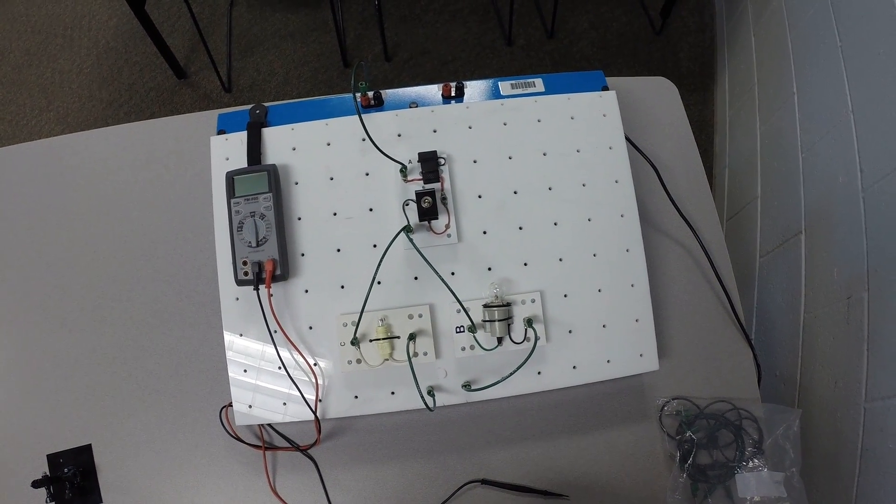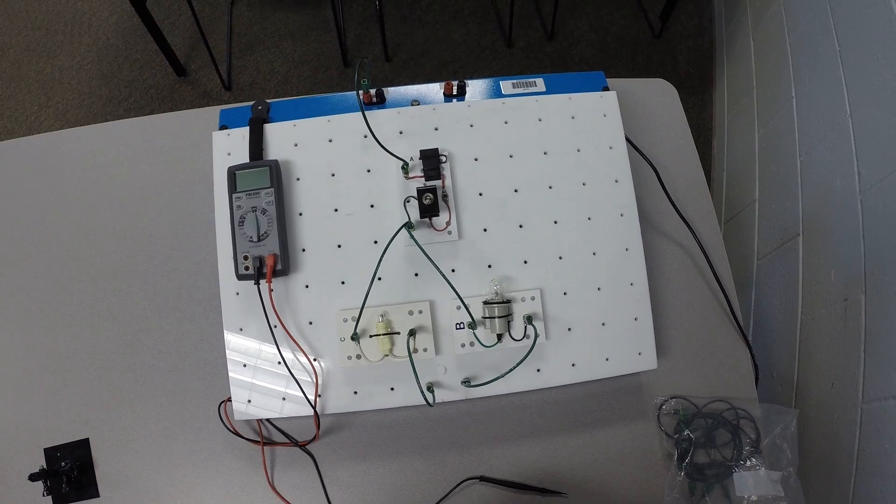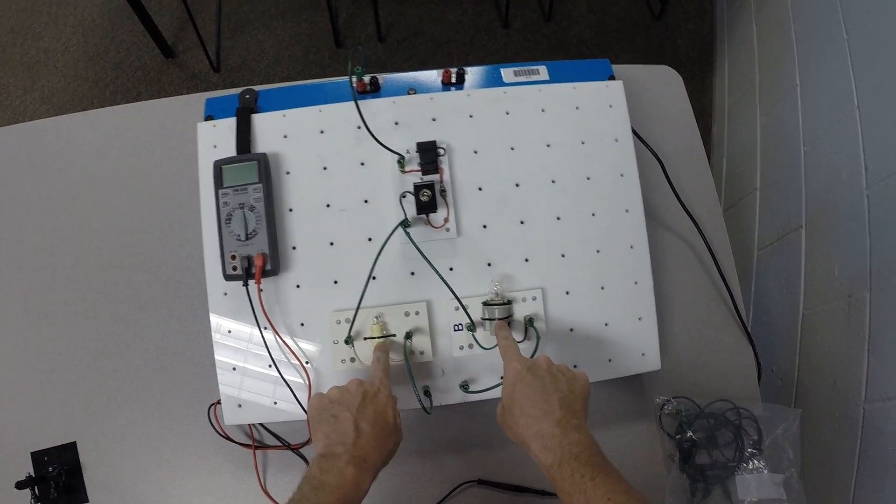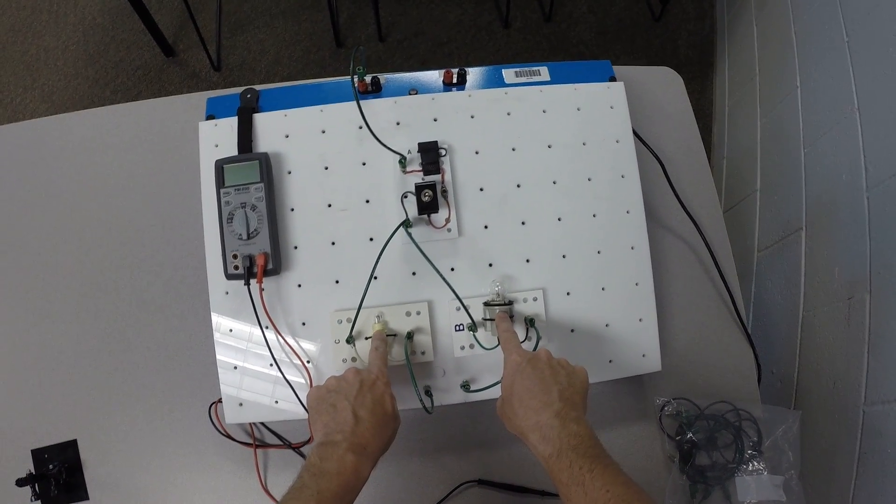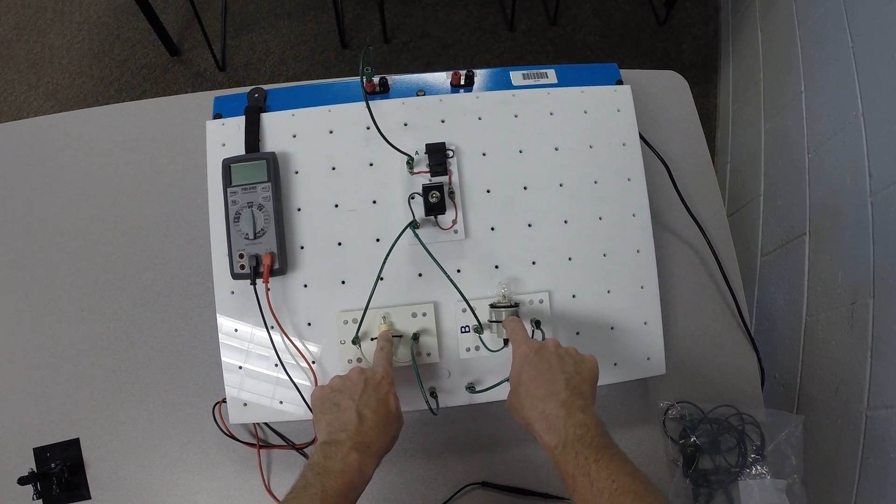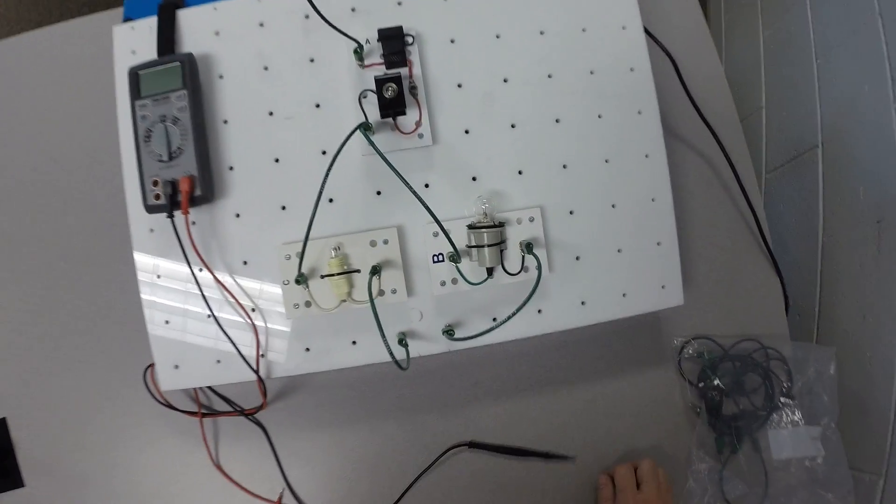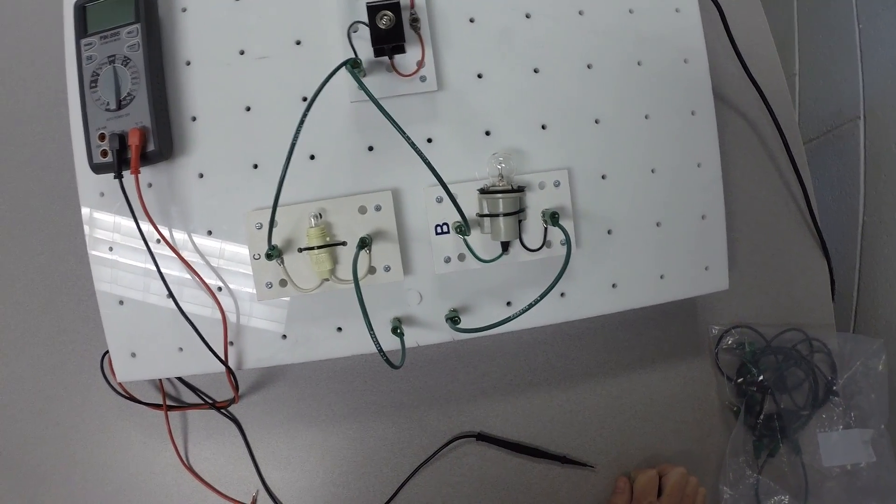If we're measuring current in a parallel circuit, there are some things that we have to consider. First of all, we've got two different bulbs here that have two different resistances, and so the amount of current that will flow through each one of these two bulbs is going to vary. It won't be the same.